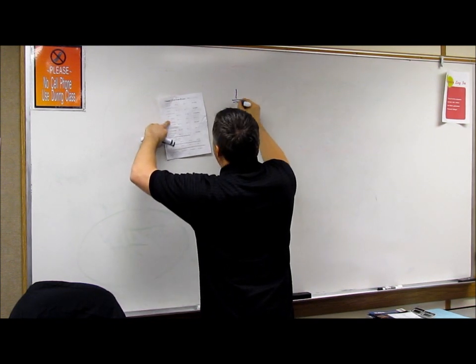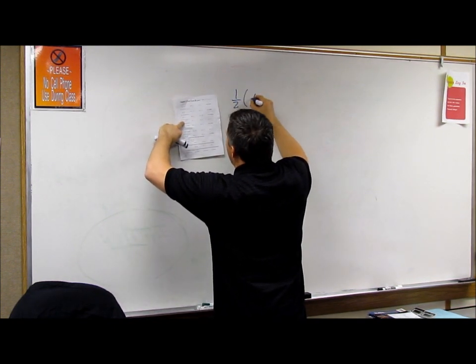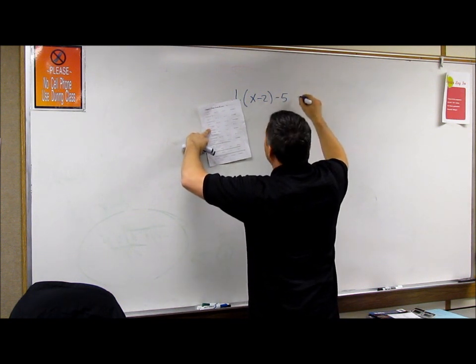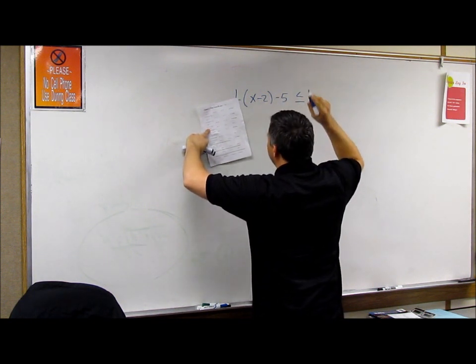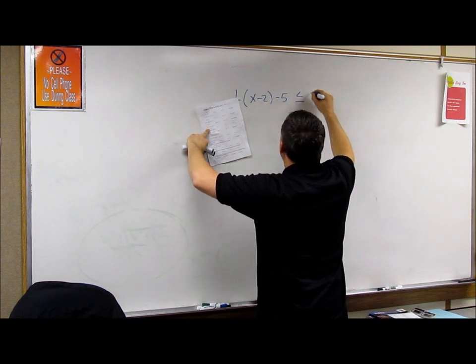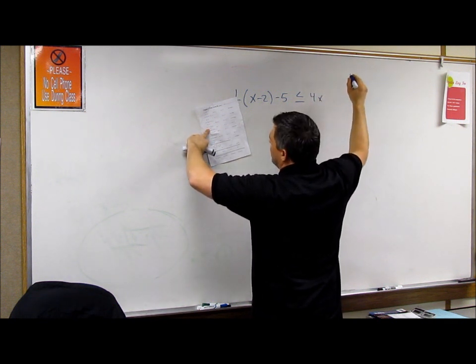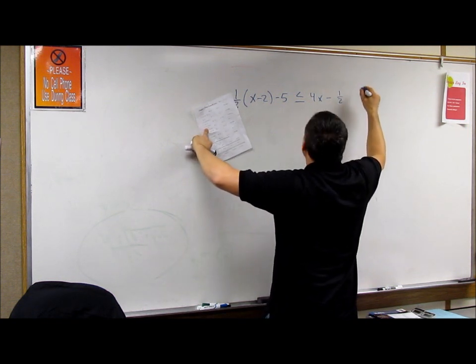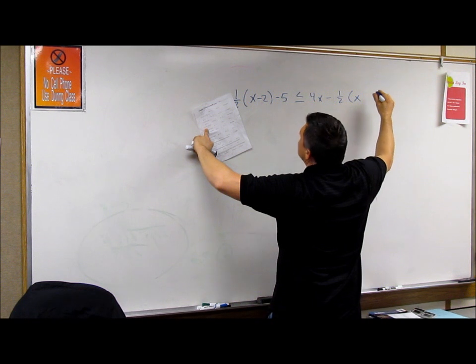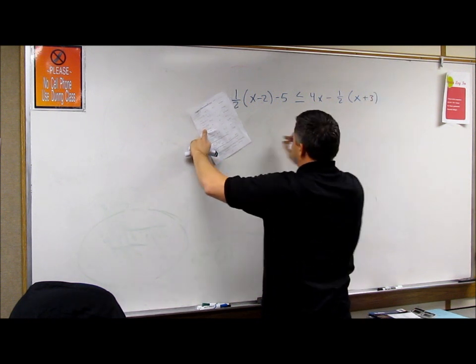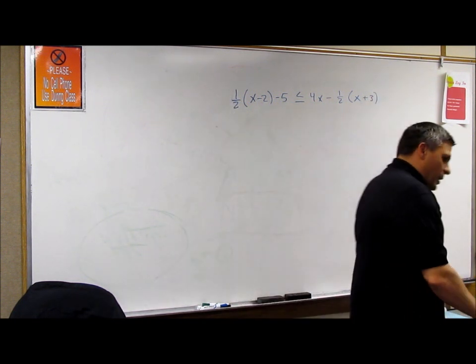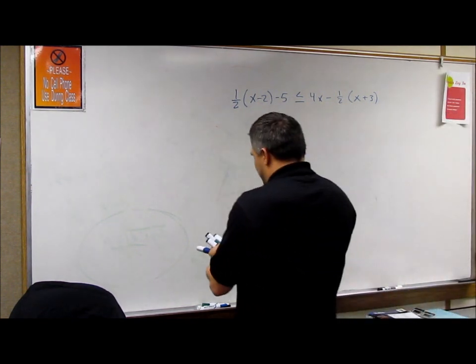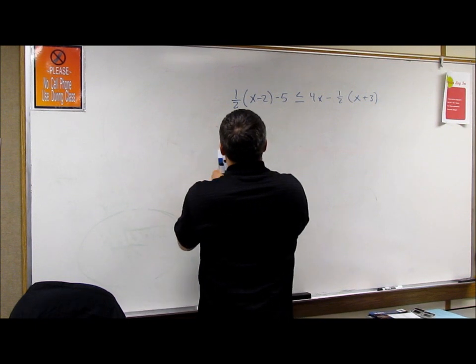Okay. 1 half x minus 2 minus 5 less than or equal to 4x minus 1 half times x plus 3. PEMDAS. Everybody on the block gets the paper.